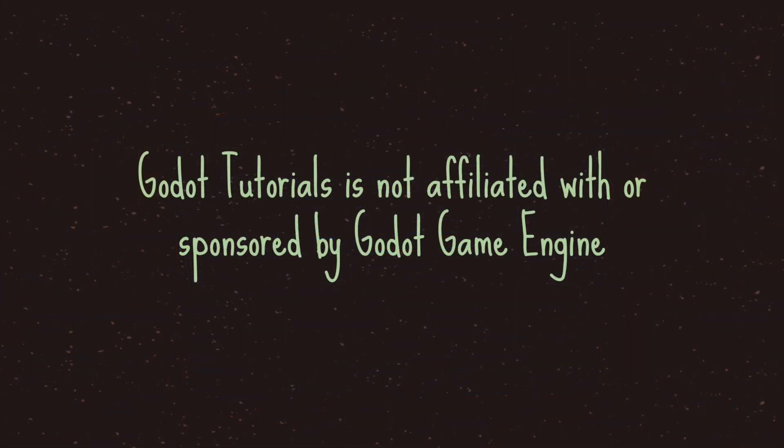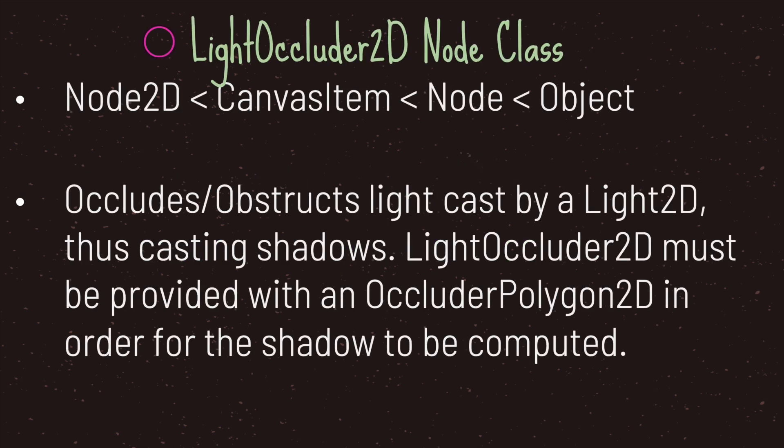Hello and welcome to another episode in the Godot Basics tutorial series. Note that Godot Tutorials is not affiliated with or sponsored by Godot Game Engine. In this episode we take a look at the LightOccluder2D node class. The LightOccluder2D node class inherits from the Node2D class, which ultimately inherits from the Node class, meaning we do have access to those lifecycle scripts. The LightOccluder2D node occludes or obstructs light cast by the Light2D node, and this is where the shadows come from.